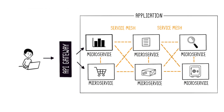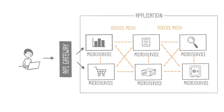Finally, there is often confusion between API Gateway and Service Mesh. The main difference is that the API Gateway manages traffic from outside the application to services inside the application, while the Service Mesh is a network service that facilitates communication between microservices internally.